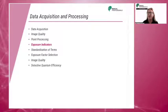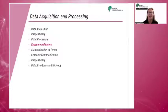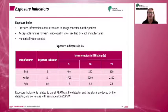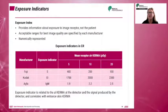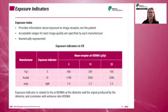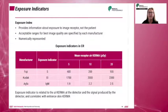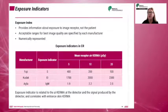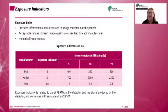In this section, we will cover the topic of exposure indicators. Exposure indicators are derived from the values of interest during histogram formation. It is important to remember that these numbers represent the exposure to the receptor and do not indicate the exposure received by the patient. Exposure indices can be affected by a number of factors having nothing to do with the technical factors used to obtain the image.